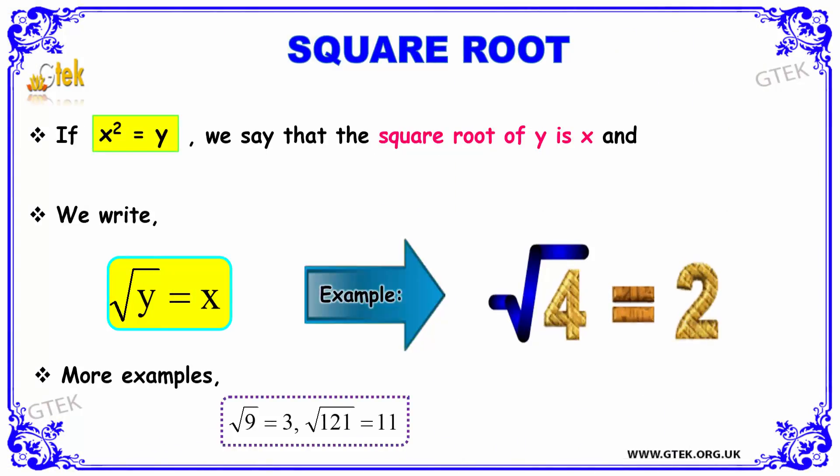If we have the equation x² = y, we say that the square root of y is nothing but x. That is, the square root of y will be equal to x.